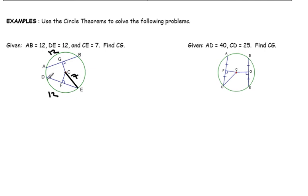So if DE, not arc DE, but this chord DE is 12, then that means it is cut in half. So it is 6 here. And if we want to find CG, it's going to be the same as CF.